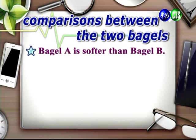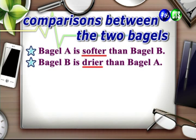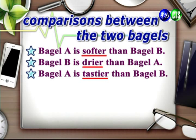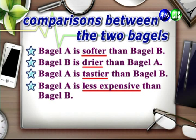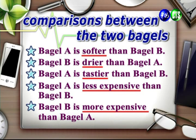Welcome back. Let's write some sentences that make a direct comparison between the two kinds of bagels. Bagel A is softer than Bagel B. Bagel B is drier than Bagel A. Bagel A is tastier than Bagel B. Bagel A is less expensive than Bagel B. Bagel B is more expensive than Bagel A. In all these examples, we're using the comparative form of an adjective to compare the bagels.